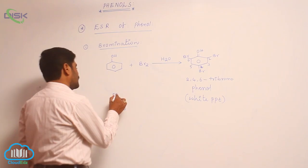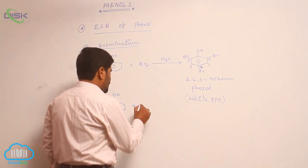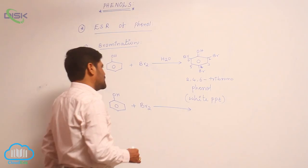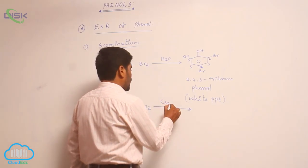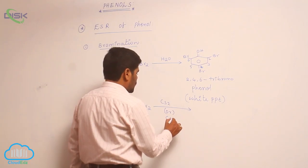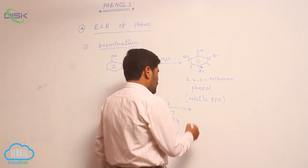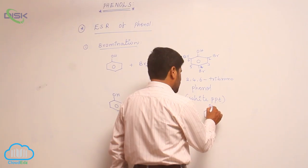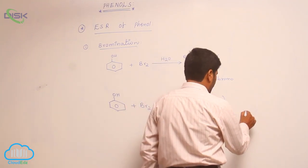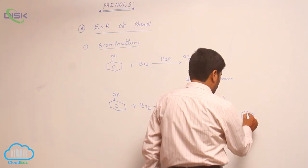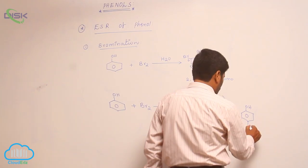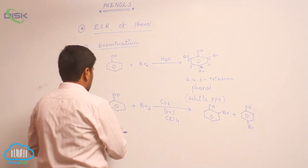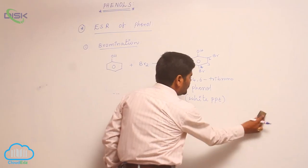If you want selective bromination, it is achieved when phenol reacts with bromine in the presence of a non-polar solvent like carbon disulfide or carbon tetrachloride. In this case, selective bromination takes place, giving ortho-bromophenol and para-bromophenol. This is the first reaction in ESR.